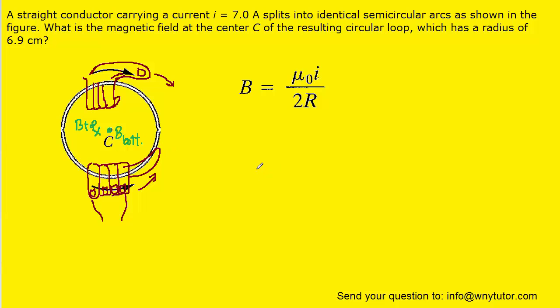So, in essence, the total magnetic field at the center of this loop is actually going to simply be zero Tesla. And so this turns out to be the correct answer.